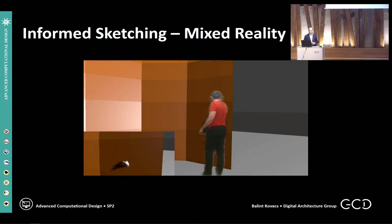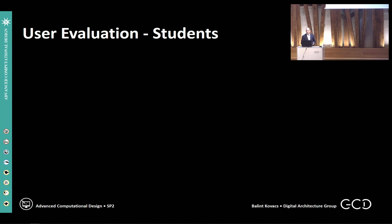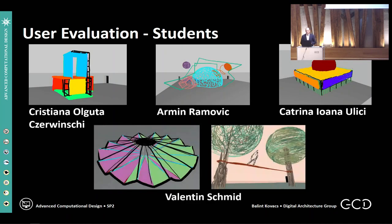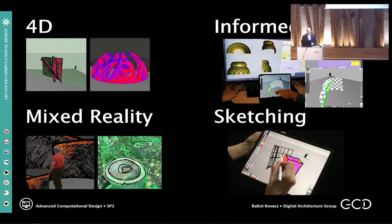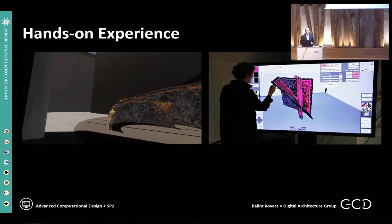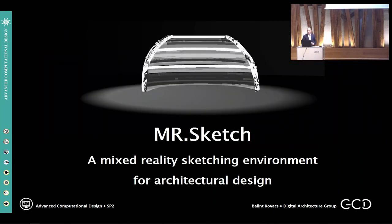When designing interactions, user evaluation becomes a central task. Recently, we evaluated the desktop version of our application with architectural design students. Although the interpretation of the study data is still ongoing, you can see some of the sketches our students have created. Our goal in SFB sub-project 2 is to further explore the possibilities of 4D informed mixed reality sketching to create new computational tools to support decision-making in the earliest stages of architectural design. We invite you to try out our application in the exhibition.